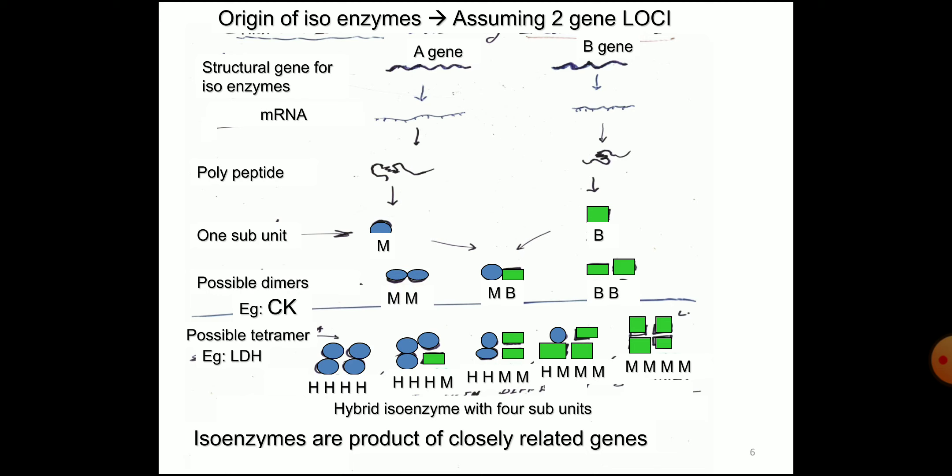Lactate dehydrogenase is a tetrameric form produced from two separate genes, with two subunits arranged in various combinations of four. Being tetrameric with four subunits, they can be arranged in various ratios, producing five isoenzymes.